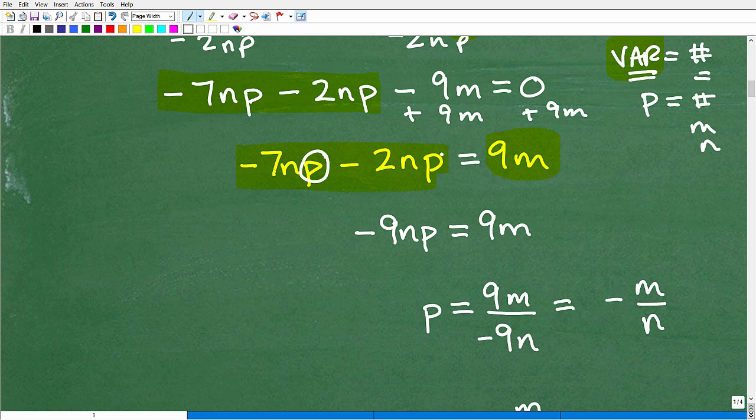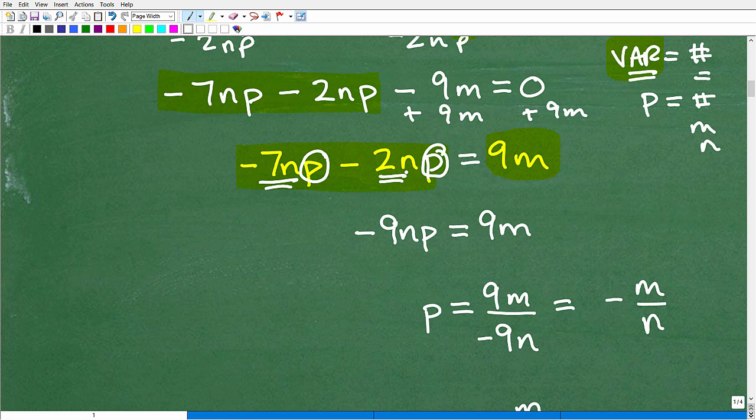Okay? So P is the variable, but I want to add these coefficients, right? Just remember, think of these as like terms. So if I have a negative 7n and a negative 2n, how many n's do I have? I have negative 9np. So I can combine these like terms, and if you're not familiar with like terms, again, you can review this. I have plenty of videos in my pre-algebra and algebra playlist, but here's where we're at. We have negative 9np is equal to 9m.